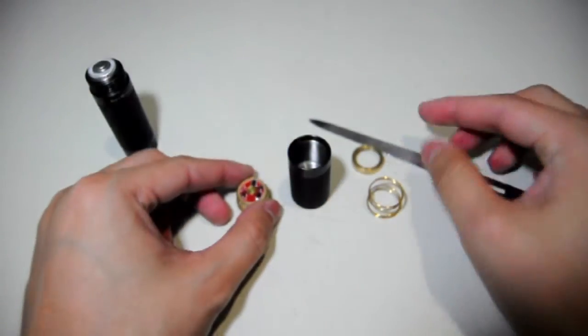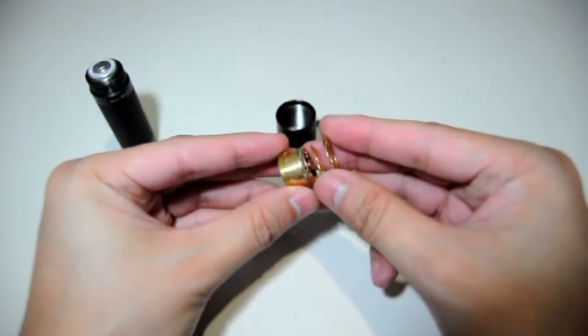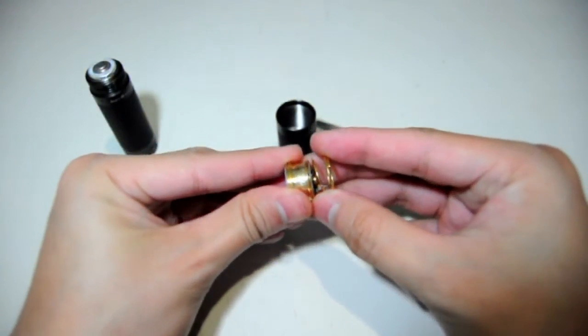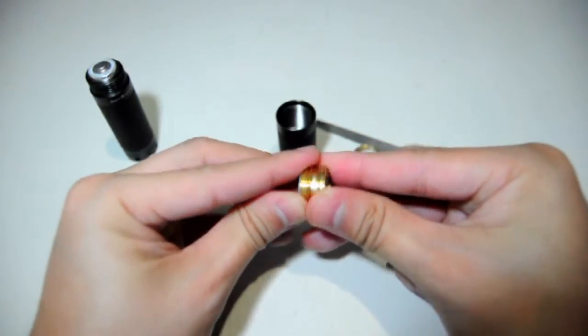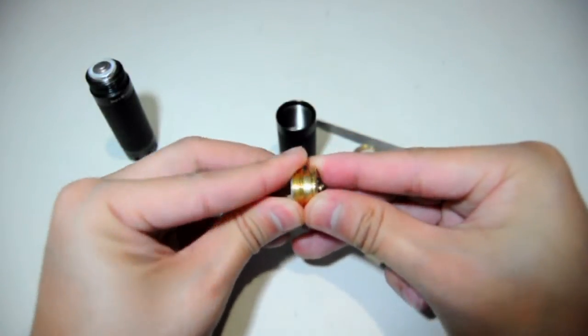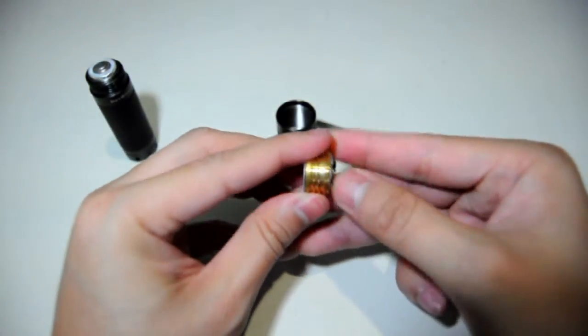To replace all the parts back, start with the spring by inserting it entirely into the light module. Make sure it fully snaps in.